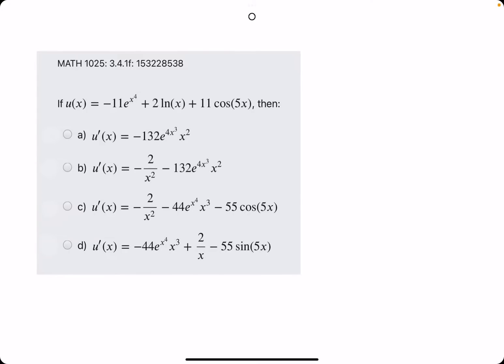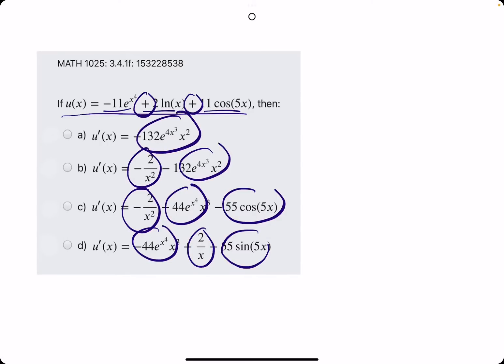Okie dokie. In this problem, we are given a function with multiple terms, and the goal is to identify what the derivative of this function is. Some little shortcut to recognize off the start is that we have three terms being added together, which means, as long as the derivative of one of these terms doesn't go to zero,